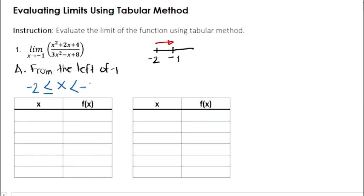So let's start from negative 2, then the next value is negative 1.5, then negative 1.1, negative 1.01, negative 1.001, and negative 1.0001.